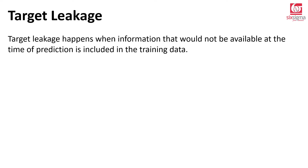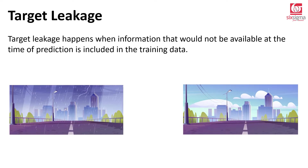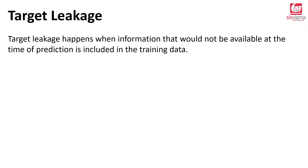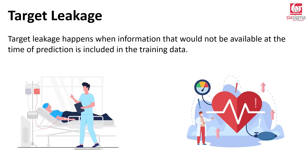Similarly, if you're trying to predict whether a patient is suffering from coronary heart disease and you use a feature about change of medication — where the medication was changed after the patient was detected to have the disease — that's target leakage. You first detect the disease and then change the medication, not the other way. You'll find people using information that was only captured after the target column was confirmed. That information is not a predictor; it's an after-effect.